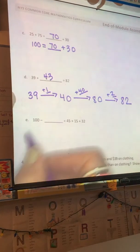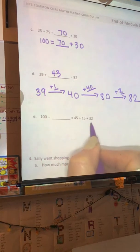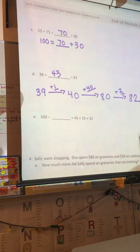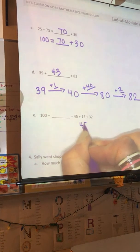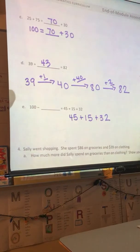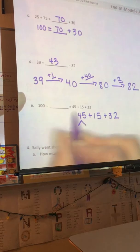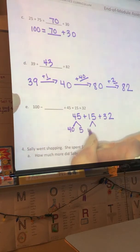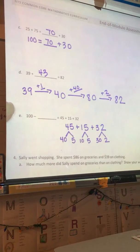Letter E. 100 minus something equals 45 plus 15 plus 32. Since this side of the equation doesn't have any blanks to fill in, I'm going to go ahead and solve this side of the equation first. So, 45 plus 15 plus 32 can be broken up into number bonds of the 1s and 10s place for each addend. So, 45 is 4 tens or 40 and 5 ones. And 15 is 1 ten and 5 ones, 32, 3 tens, 30, and 2 ones.